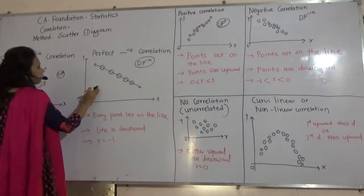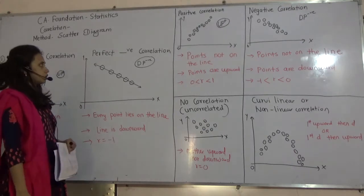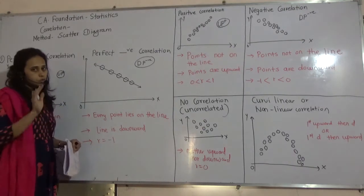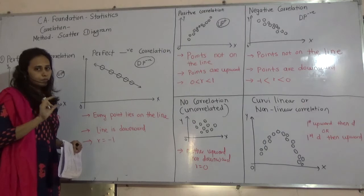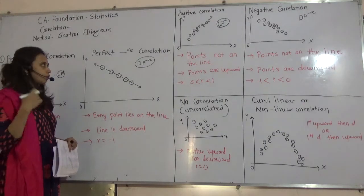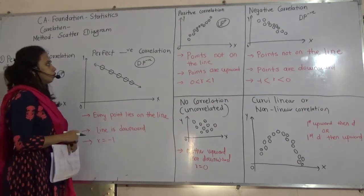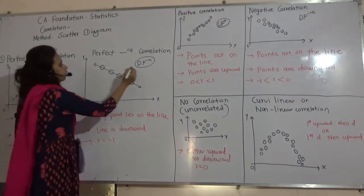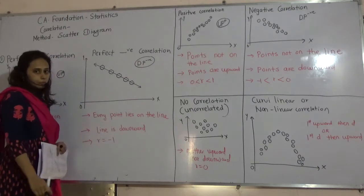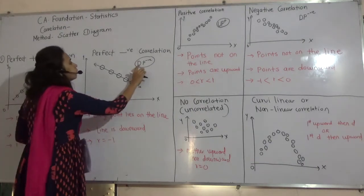Next is perfect negative correlation. Now, positive is over. Positive is U, P, upward slope. Perfect positive is upward slope. Now, next is perfect negative correlation. For this, remember, D, P negative. You all know D, P.